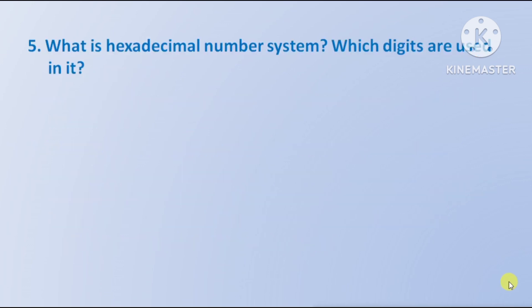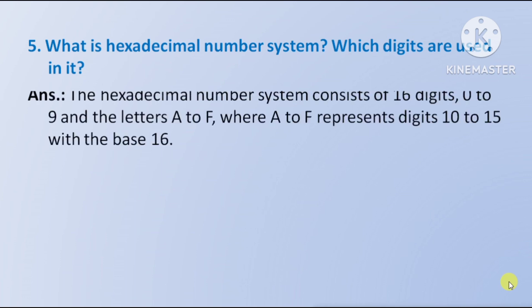Next question: what is the hexadecimal number system and which digits are used in it? Answer: the hexadecimal number system consists of 16 digits — 0 to 9 and the letters A to F, where A to F represent the digits 10 to 15, with base 16.